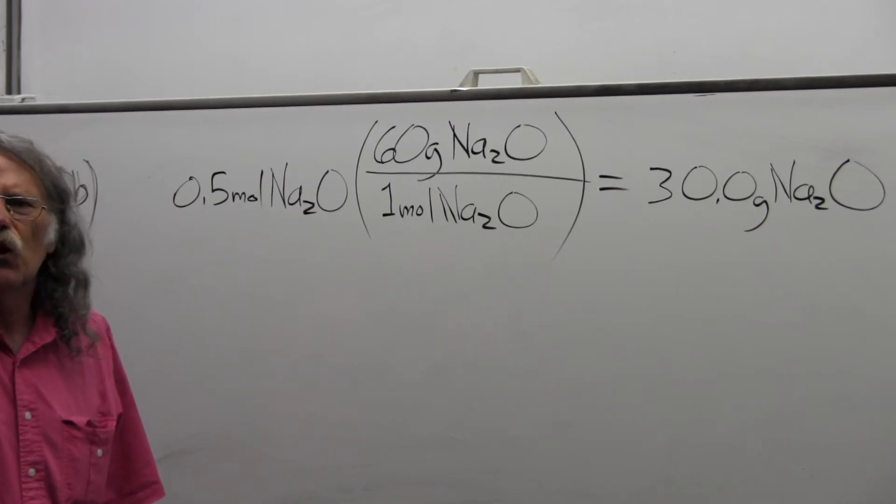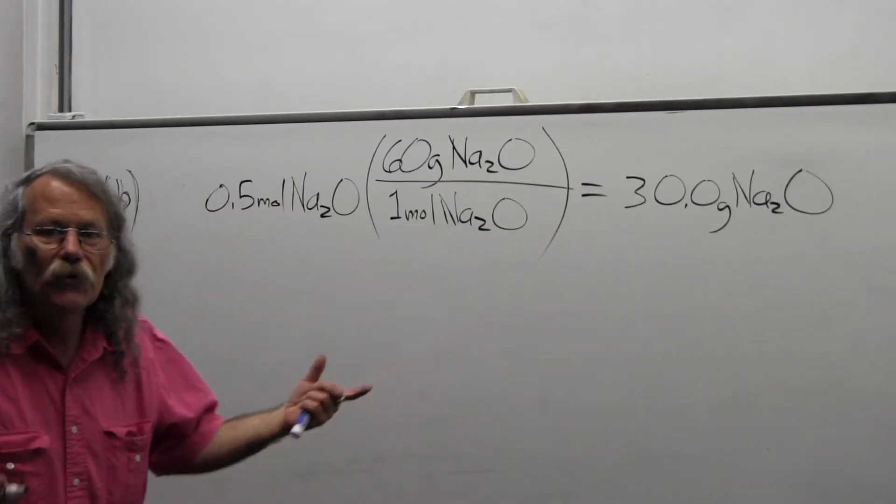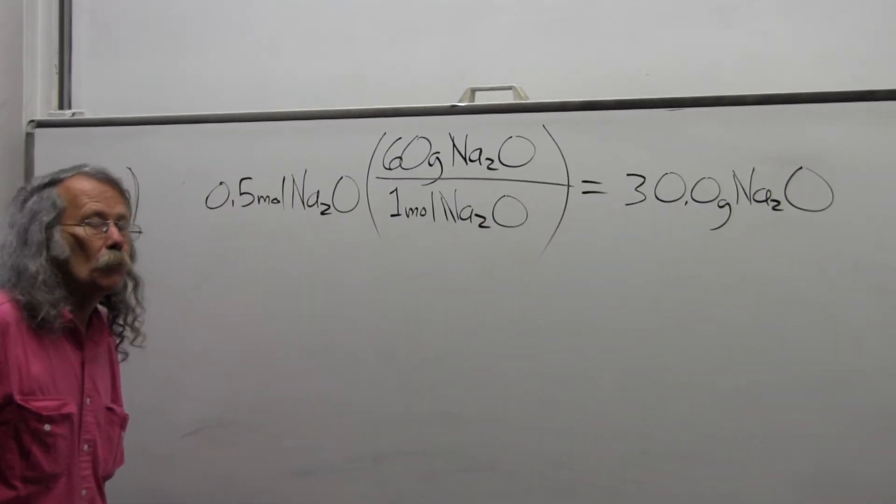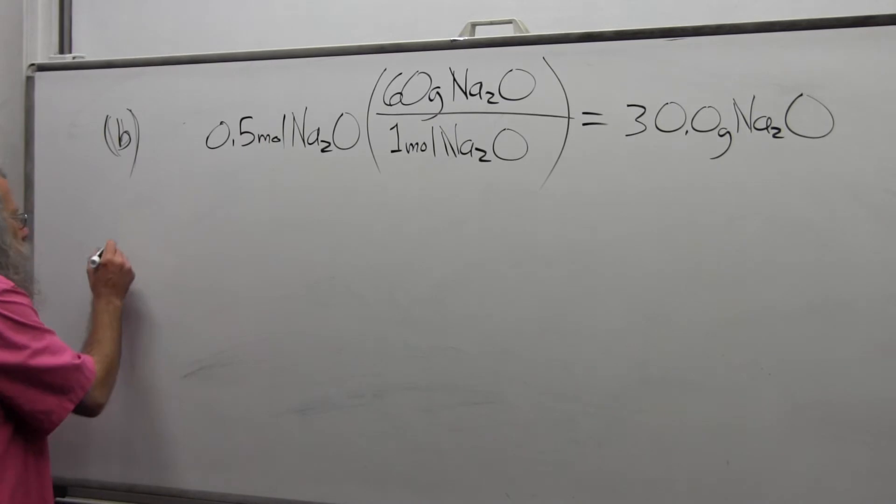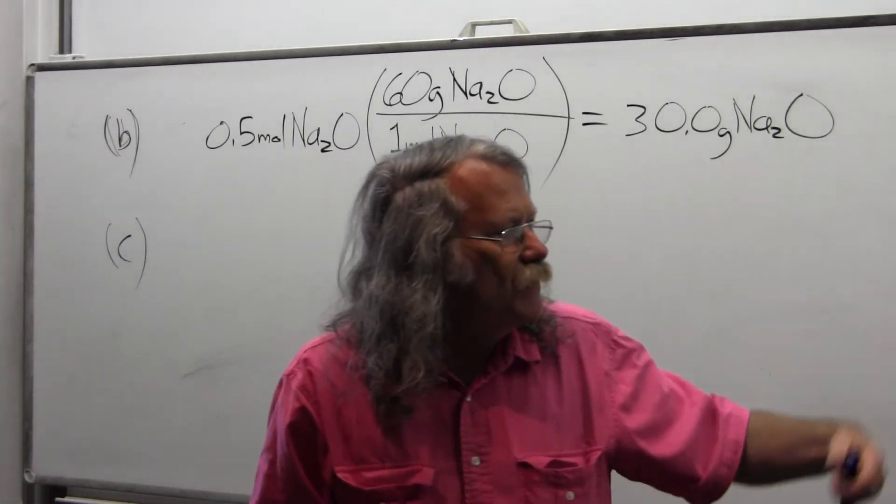Let's go on to do part C. Since this is continuous—since we're already here, we've done this much—we might as well answer part C. And part C is that we actually obtain 15 grams of sodium oxide. What is the percent yield?